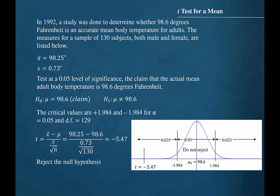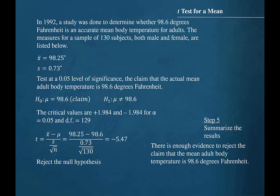Step 5 is to summarize the results. Since we decided to reject the null hypothesis, our conclusion is that there is enough evidence to reject the claim that the mean adult body temperature is 98.6 degrees Fahrenheit.